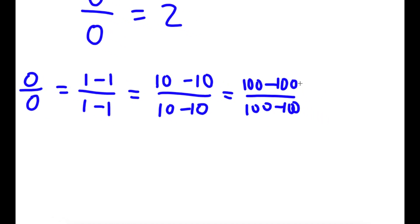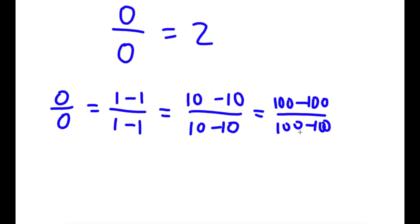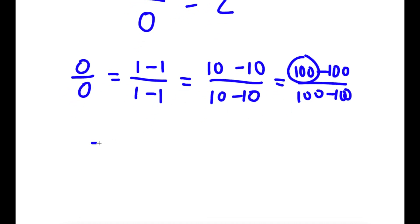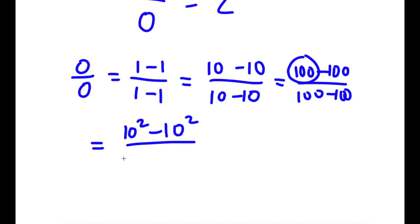Now I'm actually going to simplify 100 minus 100 over 100 minus 100. Since 100 is the same thing as 10 squared, the numerator becomes 10 squared minus 10 squared. For the denominator, 10 squared is the same thing as 10 times 10, so I write 10 times 10 minus 10 times 10. This is again equal to 0 — still 0 over 0.